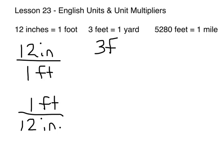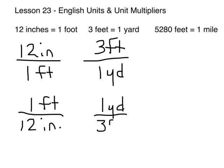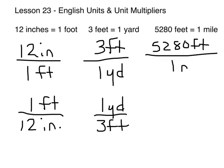3 feet to 1 yard, or I could write it like this, and then 5,280 feet to 1 mile, or 1 mile to 5,280 feet. Now, the trick is knowing which one to use when, and that's where the cross-cancelling comes in to play.